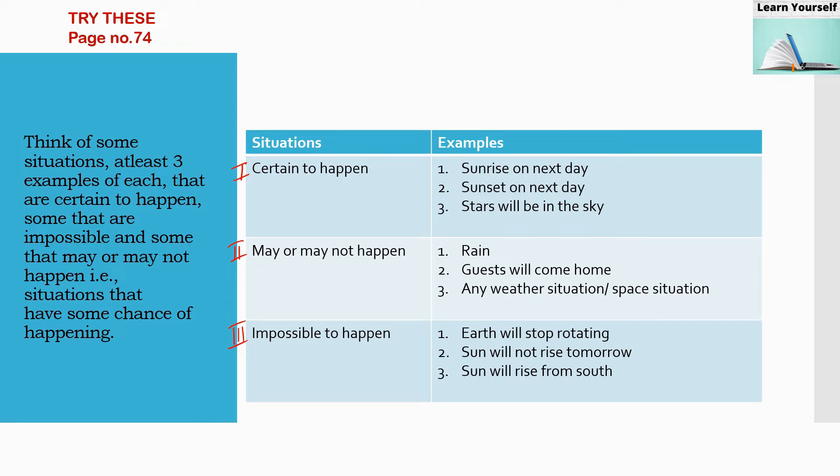So first is sunrise on next day, sunset on next day. Here you can also mention the day like sunrise on Monday, sunrise on Tuesday, or tomorrow. And third, stars will be in the sky at night. So these are the three situations which are going to happen.